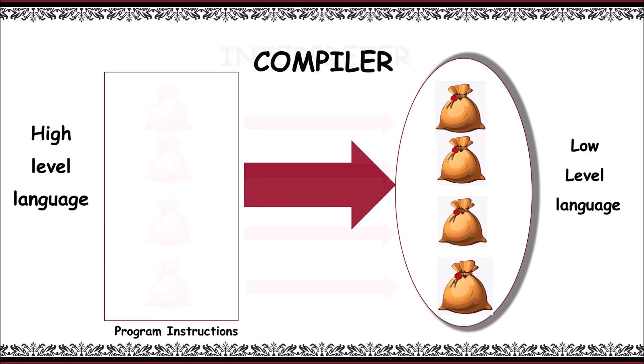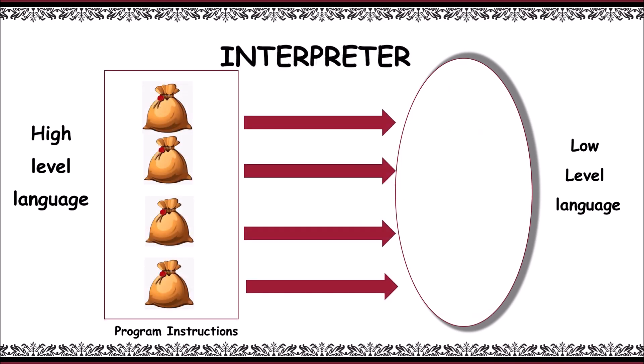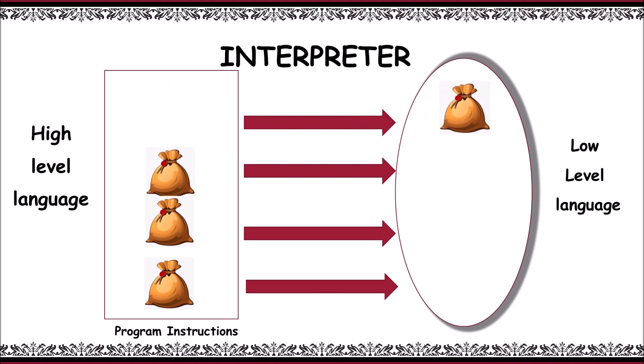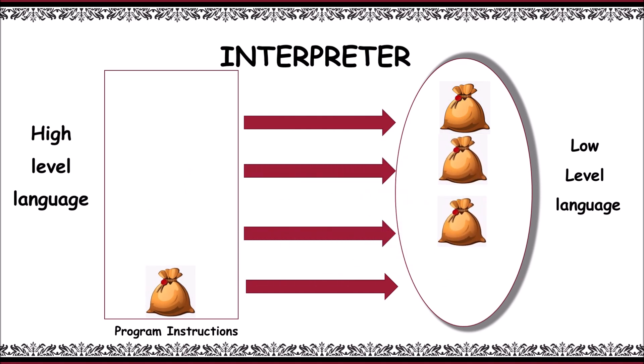Next, coming to the interpreter. The interpreter translates a program from high-level language to machine-level language in a line-by-line fashion. It translates the first instruction, then the second, then the third, and so on. Programming languages like Python and Ruby use this interpreter.